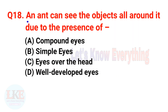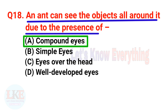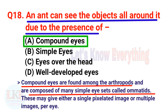Question 18: An ant can see objects all around it due to the presence of compound eyes. Compound eyes are found among arthropods and are composed of many simple eye units called ommatidia. These may give either a single pixel image or multiple images per eye.